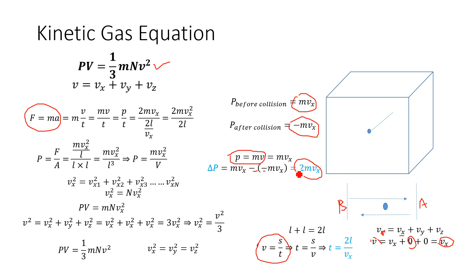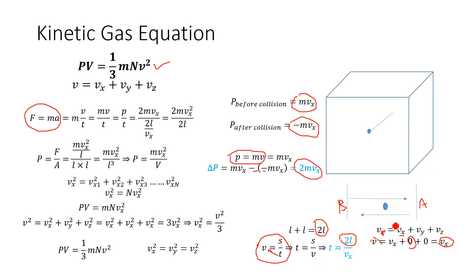Now we need to determine the time it takes to collide from one wall to another. When the molecule strikes wall A, it travels to wall B and comes back, covering a total distance of l + l = 2l. Using velocity = distance/time, we get time t = 2l/vx. So: change in momentum = 2mvx, and time = 2l/vx.